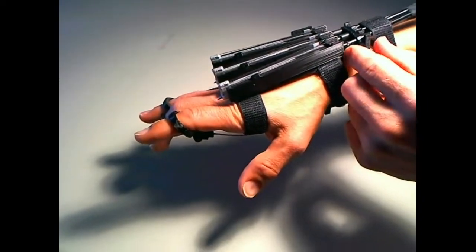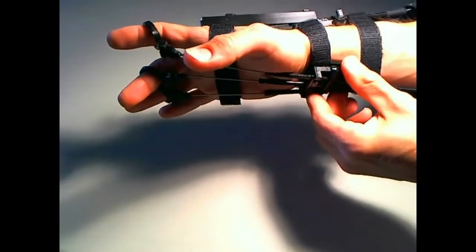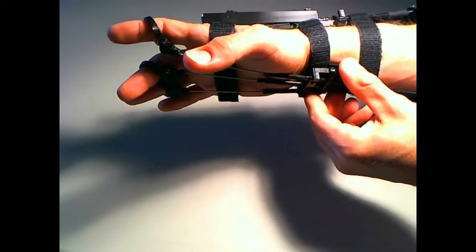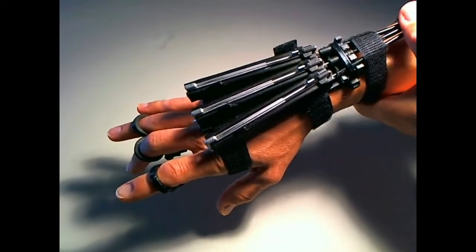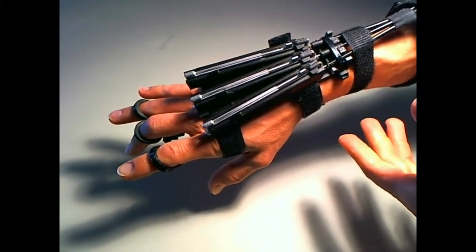And then I've got a sliced smaller version of this anchor system here underneath on my wrist for the other end of the cables. Now the cables are actually from a bicycle braking system, also known as a bowden cable system.